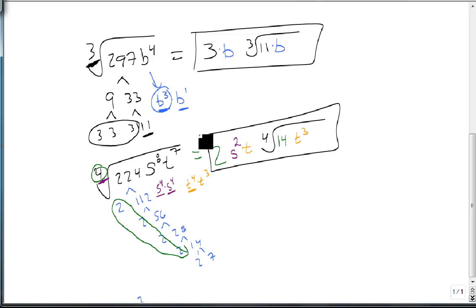So by using prime factorization, we are quickly and easily able to see what's able to come out and what's not.